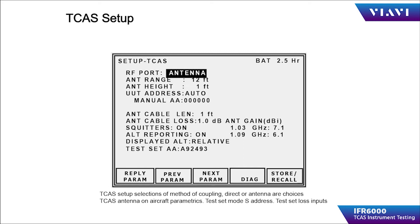Input the length and loss of the coaxial cable being used to connect the IFR 6000 flat blade antenna to the test set antenna connection. Squitters should be set to ON. Altitude reporting is set to ON. Displayed altitude is either relative or absolute; relative would be relative to the altitude of the aircraft being tested.